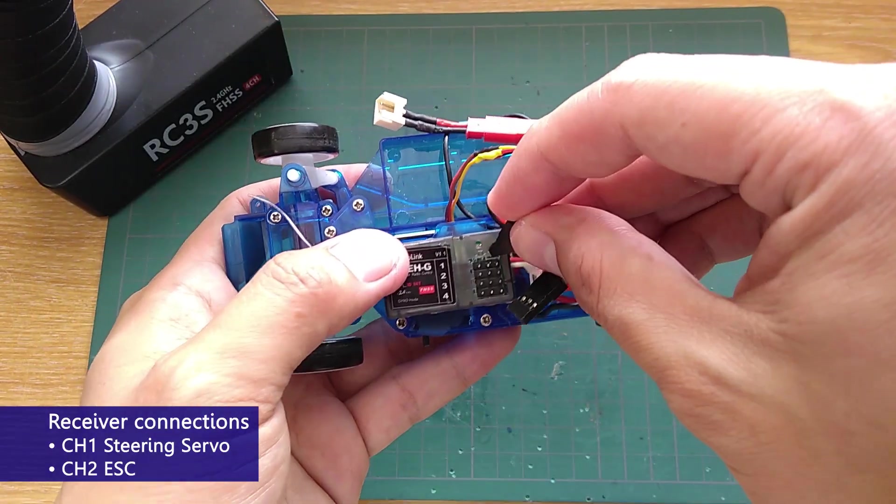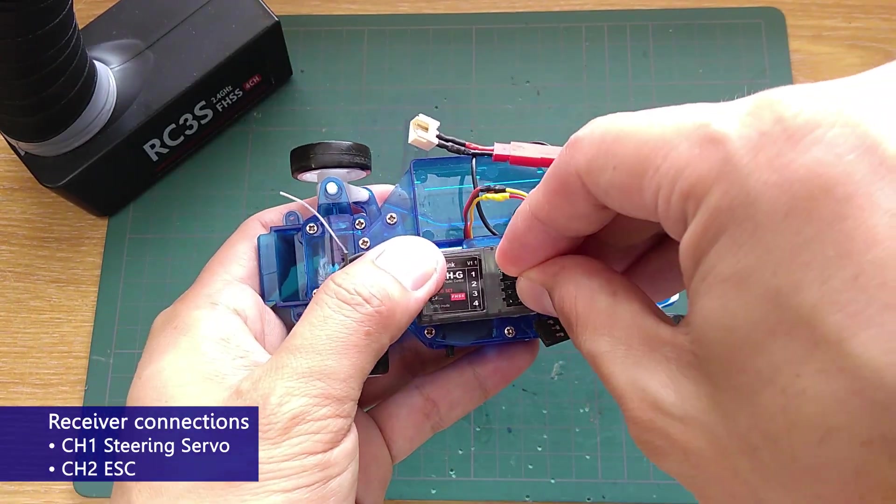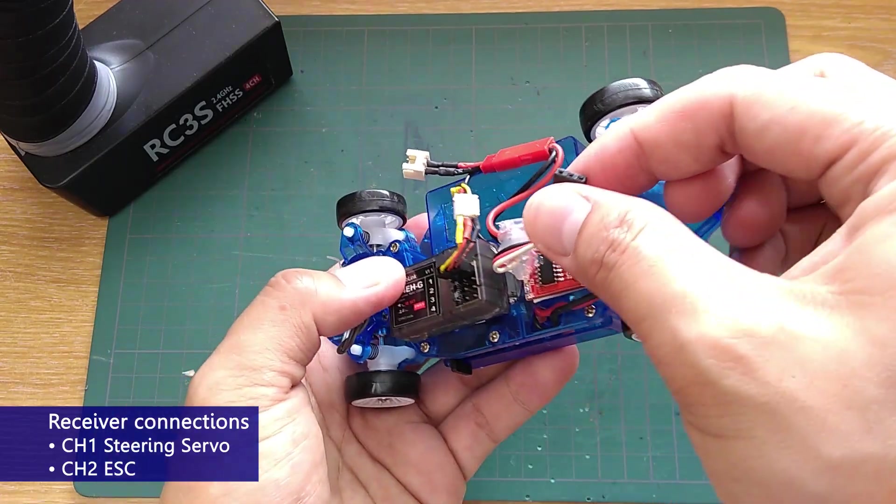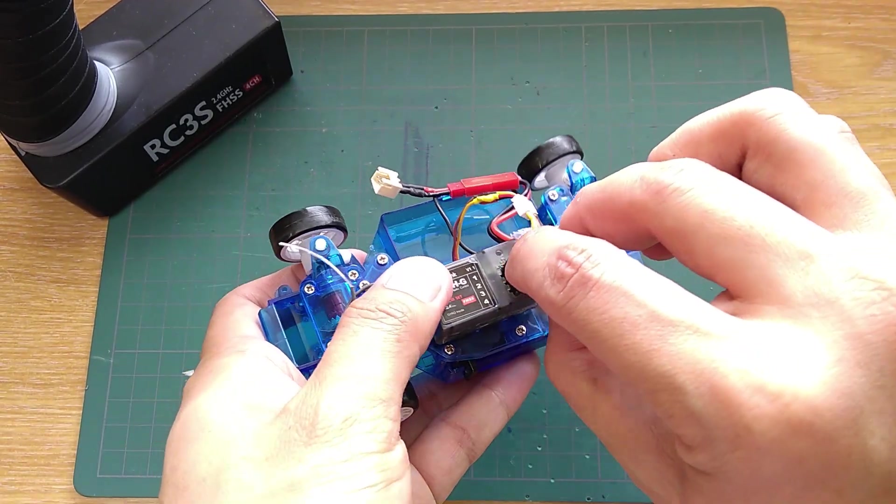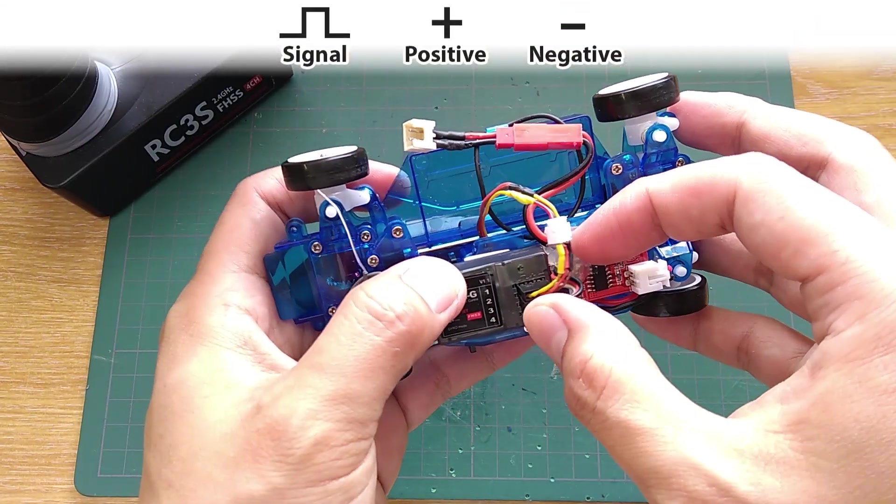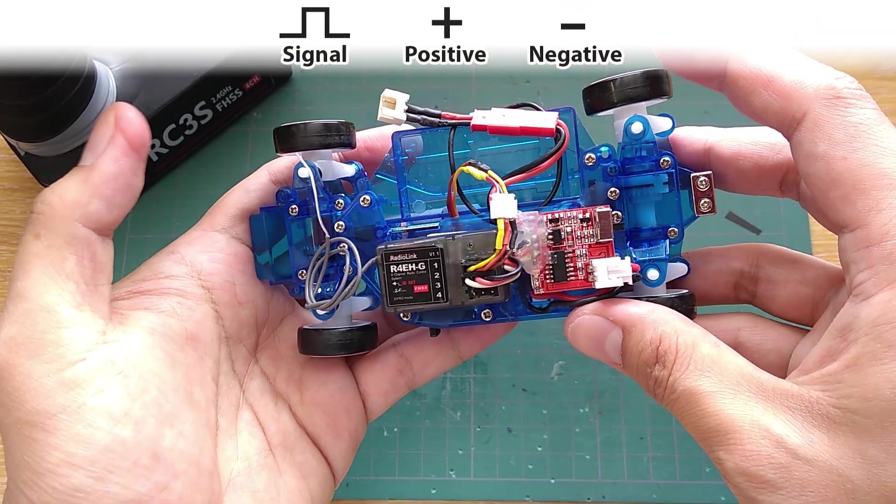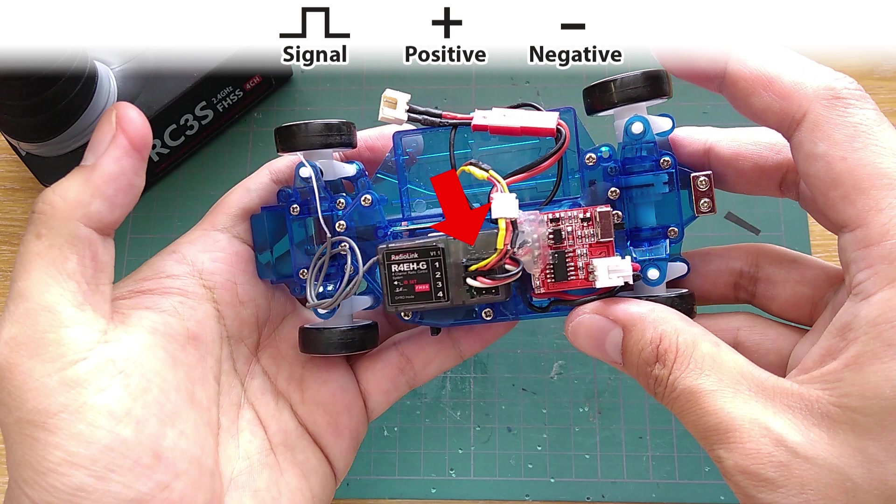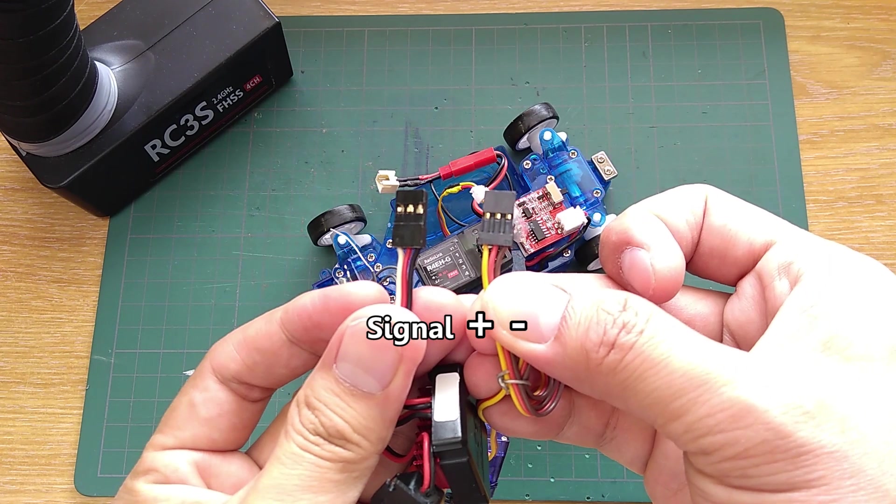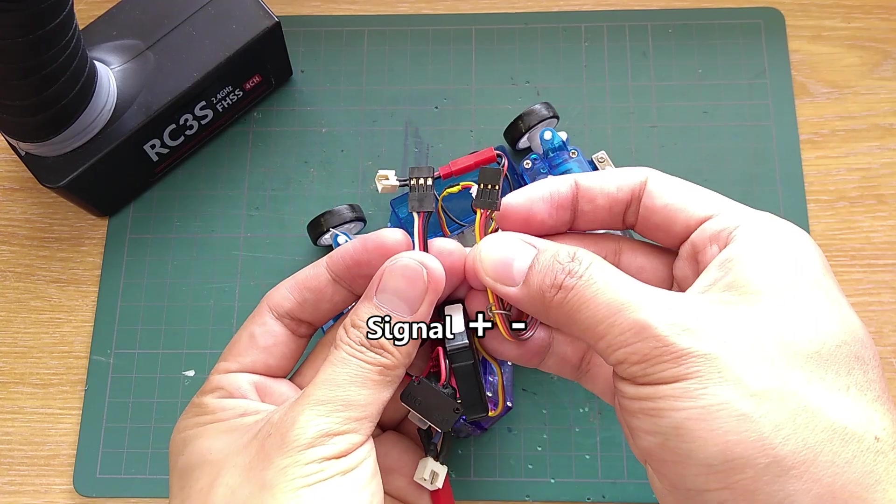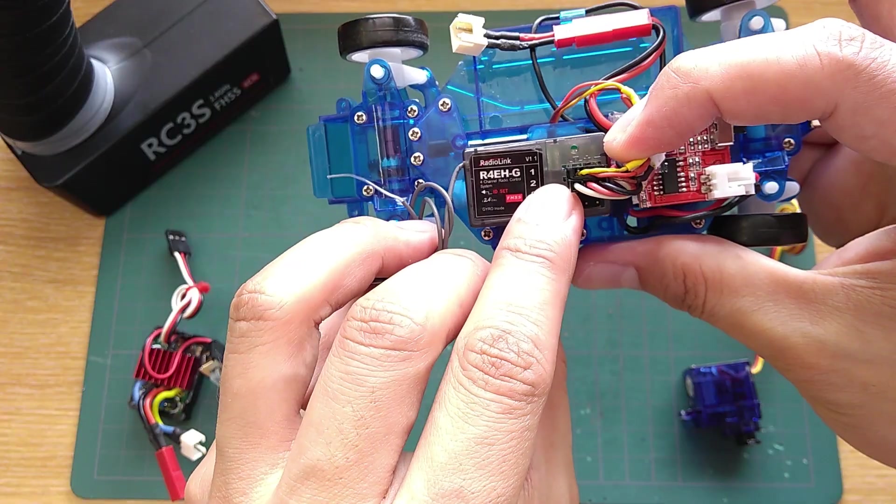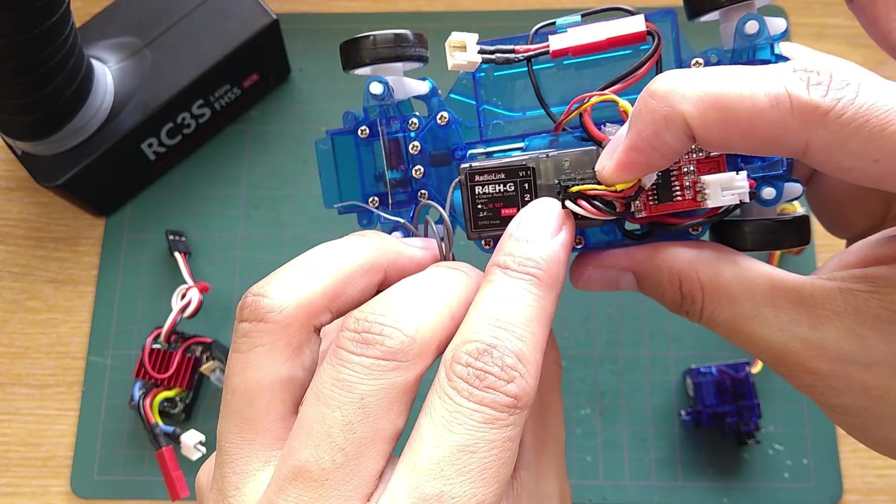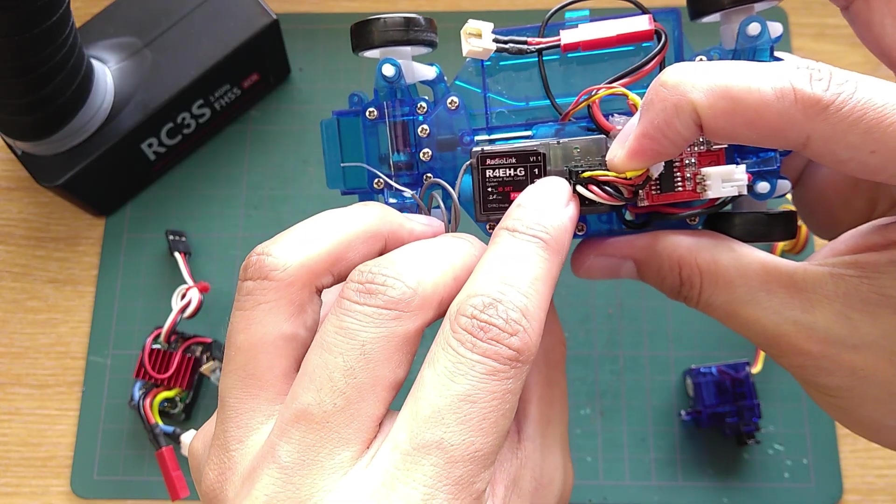Servo to channel 1. ESC to channel 2. Check the polarity of the receiver to see where the signal, positive and negative are connected to. The receiver should have some labeling on it to show you how to plug the wires in. On the servo and ESC, normally white or yellow wire is signal and black or brown is negative. Don't plug it in the wrong way because it might short circuit and end up frying the whole system.